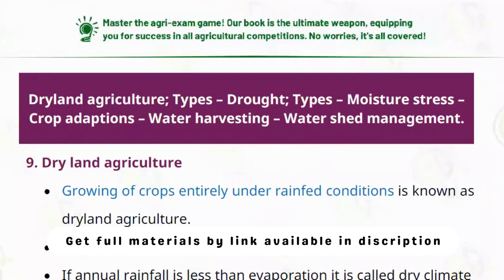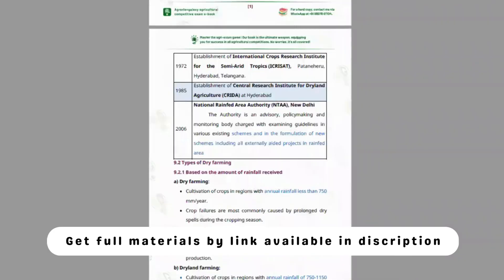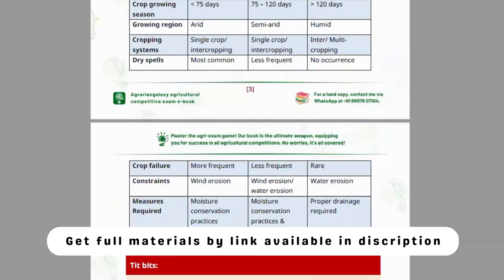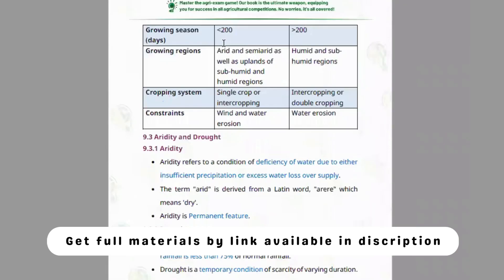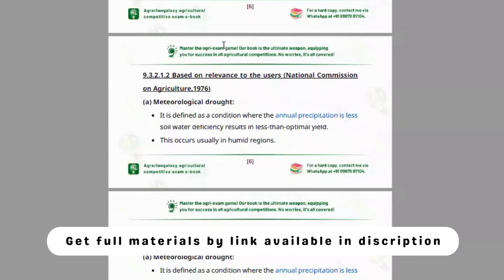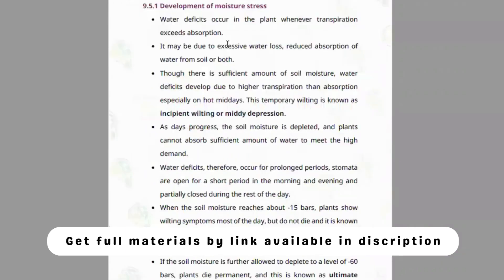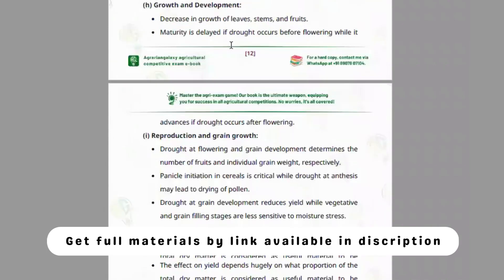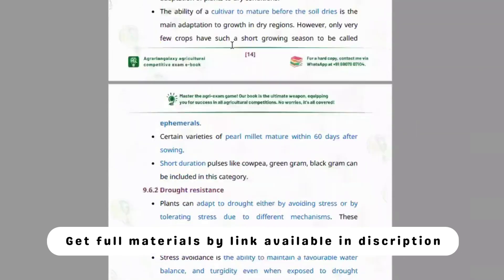Module nine is all about dryland agriculture — effects of moisture stress, dry farming, and rain-fed farming. Topics include what is RDT, drought, and classification of drought. Other types of drought and the effects of moisture stress are clearly explained.